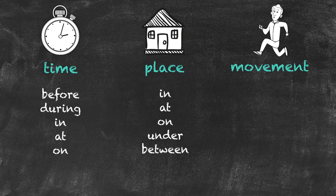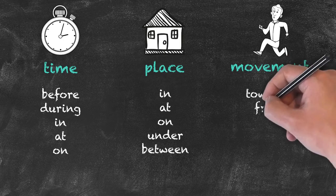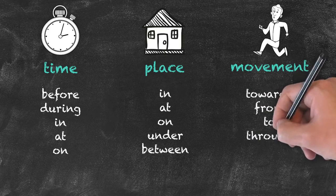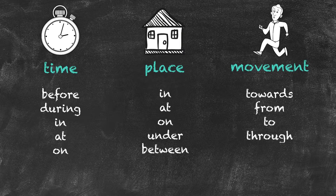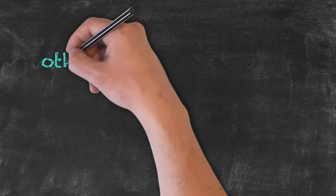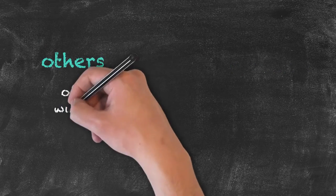Then we have prepositions of movement. These show movement towards, from, to, or through. For example, I could say 'he walked through the park,' relating the park to the rest of the sentence.